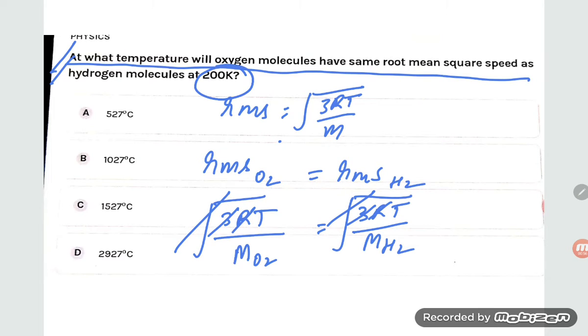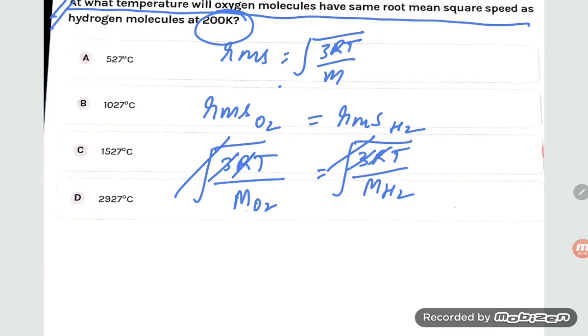Temperature here they have given 200K, so T upon MO2 means oxygen molecular weight 32 is equal to T, here they have given 200 upon that is 2, right.